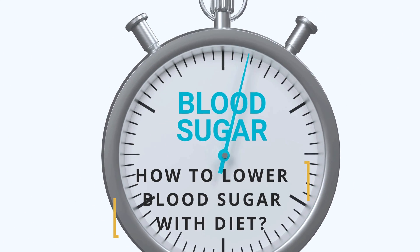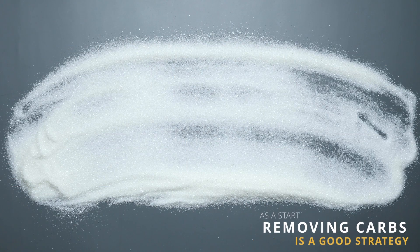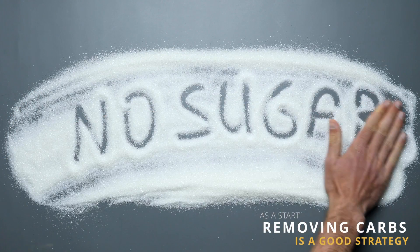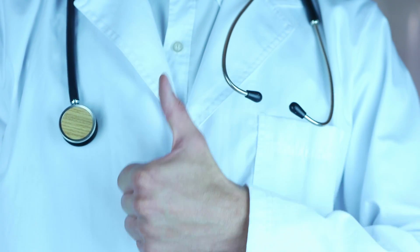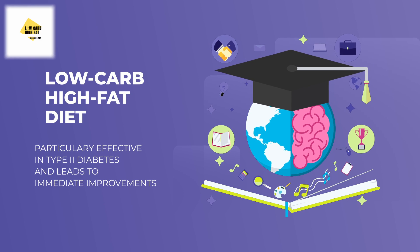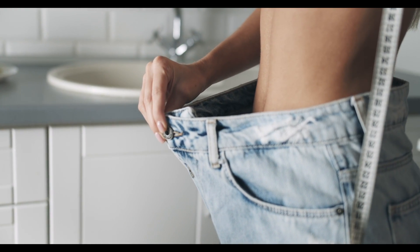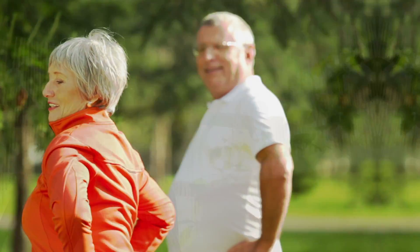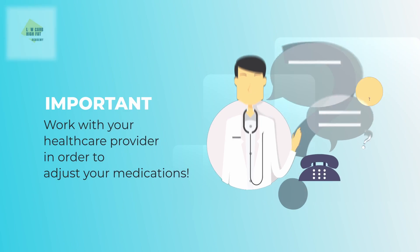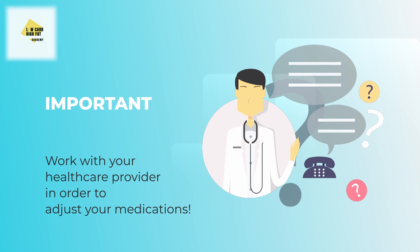How to lower high blood sugar levels through dietary changes. Removing foods that cause high blood sugar from your diet is a good strategy, and there are still plenty of delicious foods left to eat. A low-carb, high-fat diet is particularly effective for people with type 2 diabetes, as it typically leads to immediate improvements in blood sugar levels, weight loss, and other health markers such as healthier looking skin, a burst of energy, and a better mood. However, it's important to work with your healthcare provider to adjust medications when changing your diet.